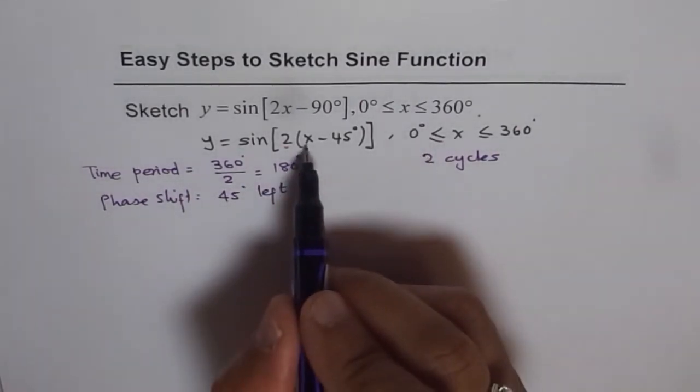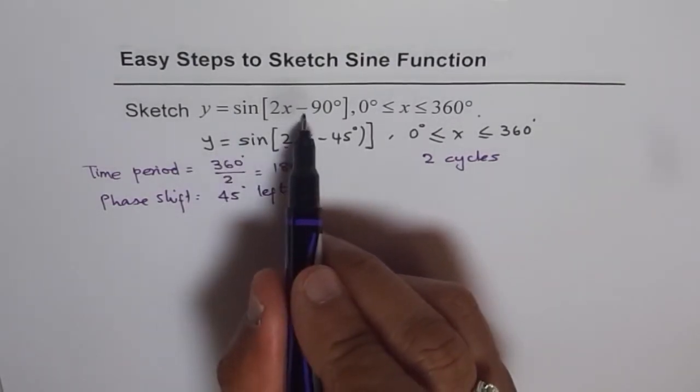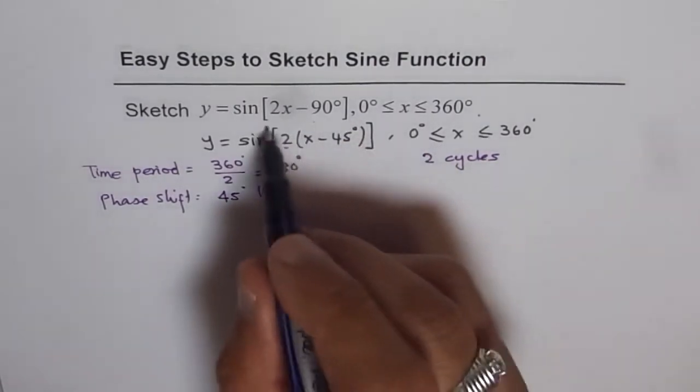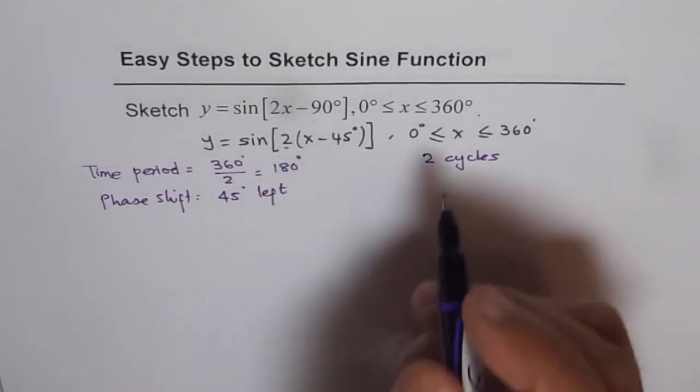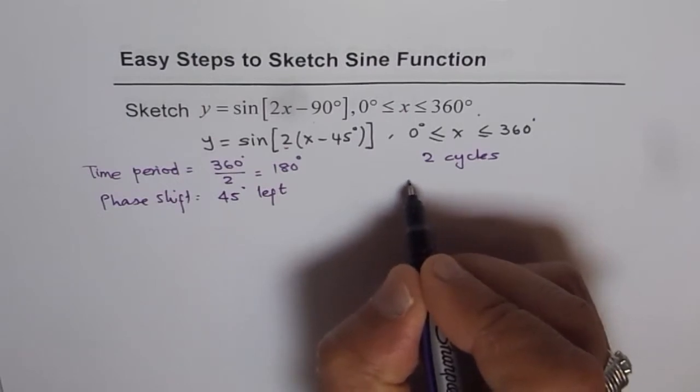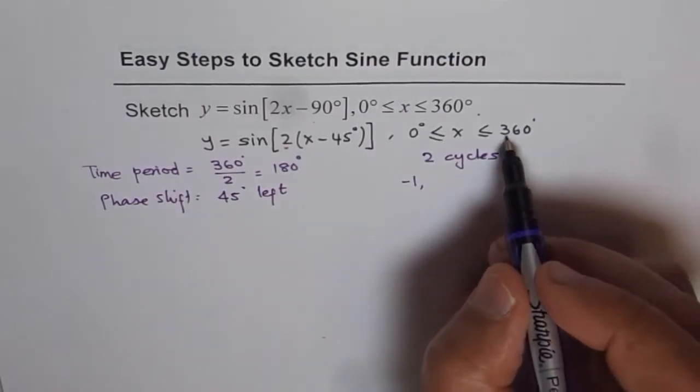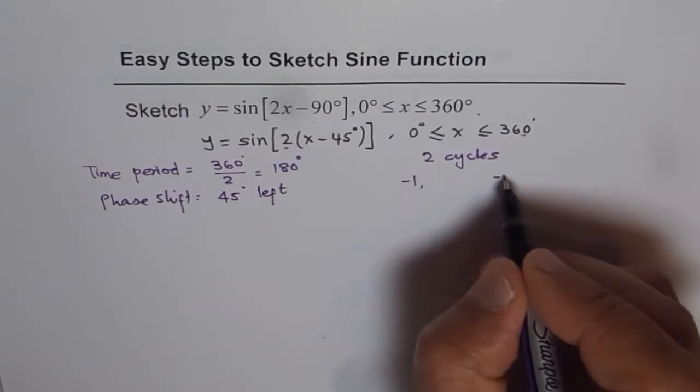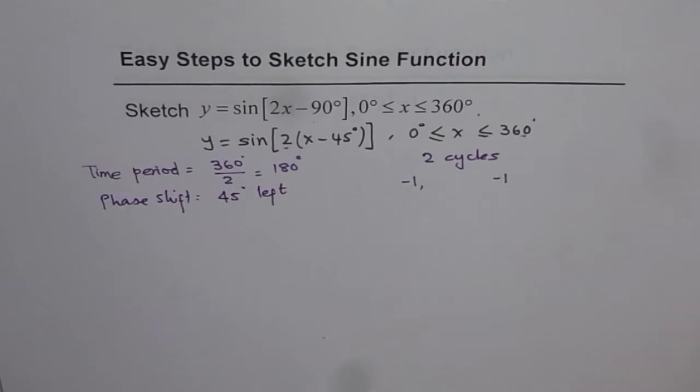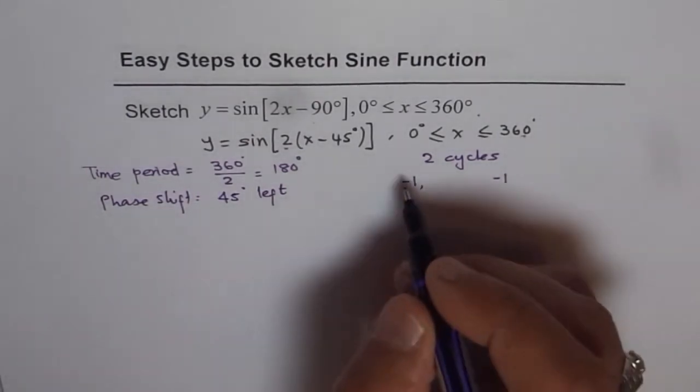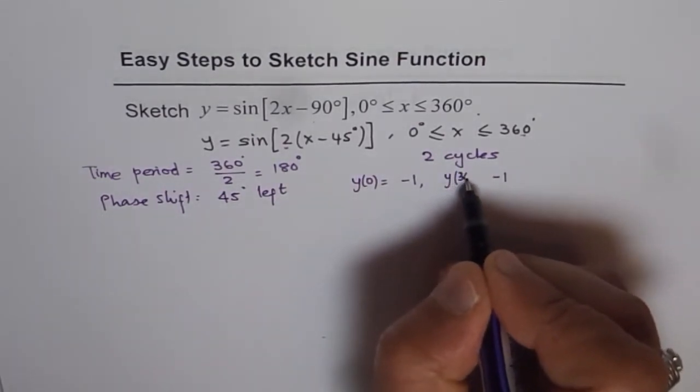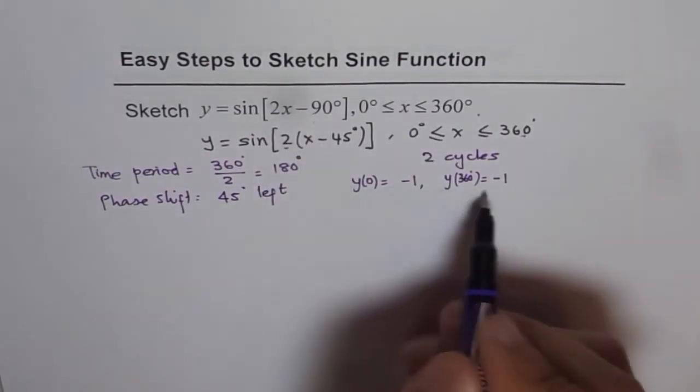Now if I put 0 here what do I get? I get sine of minus 90. So we know at 0 our value will be minus 1. Sin of 90 is 1 and sin of minus 90 is minus 1. So the value at 0 will be minus 1. Now what is the value at 360? If I substitute 360 here or in the first equation, the value is again minus 1. That is important to understand since it helps you validate or check your result. So these are the values which we checked. Let me write values: y(0) when x is 0 and y(360 degrees). So if I substitute 360 here, I get that. So that is my value.